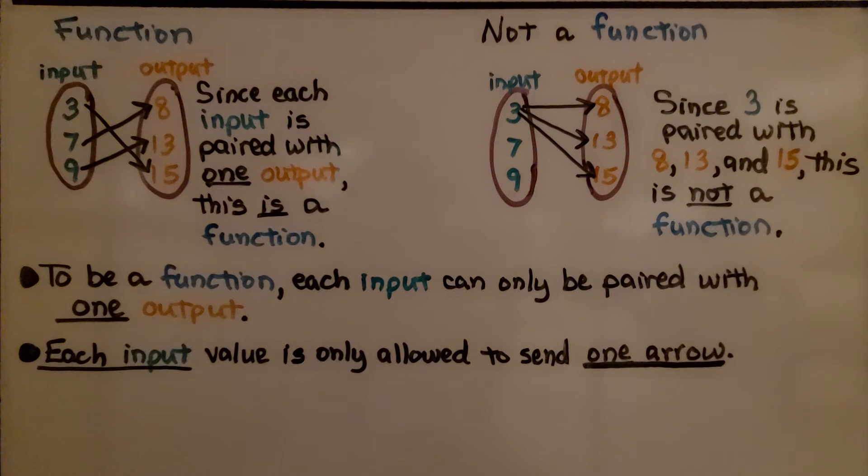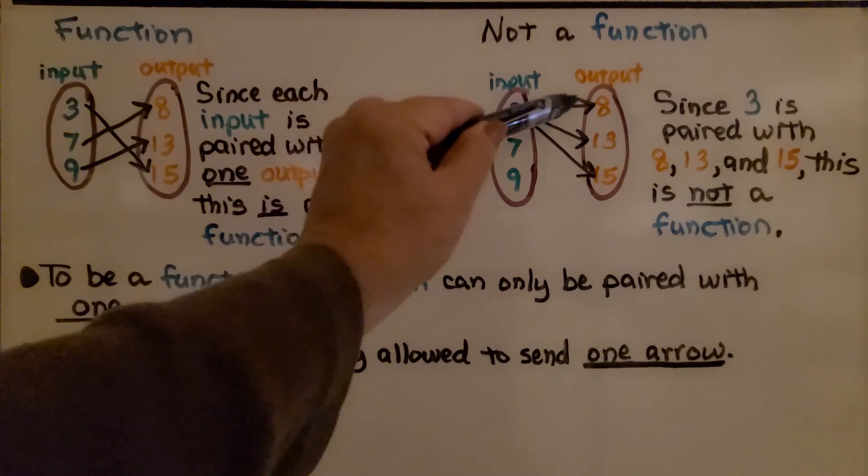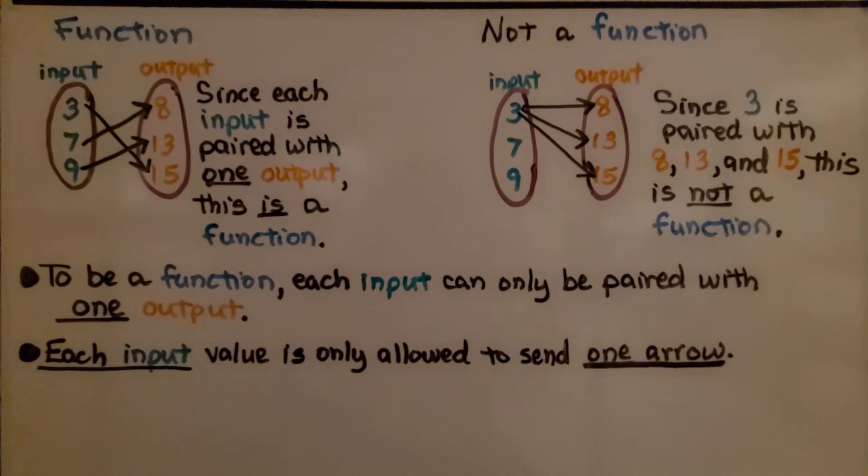To be a function, each input can only be paired with one output. Each input value is only allowed to send one arrow. Here they are sending one arrow from each input, and here this input is sending three arrows. That's not a function.